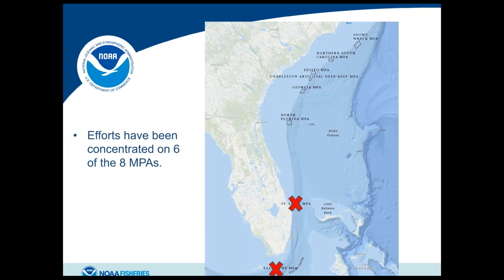We also started sampling the Charleston Artificial Deep Reef MPA in 2016 once structures were deployed. We did not target St. Lucie or the East Hump MPA — logistically, covering such a large area with just a two-week annual cruise was not possible. However, we opportunistically sampled St. Lucie Hump in 2016 because bad weather pushed us south, and we were able to completely map the MPA and conduct the first visual survey, finding the first known live Oculina coral mounds south of Jeff's Reef.